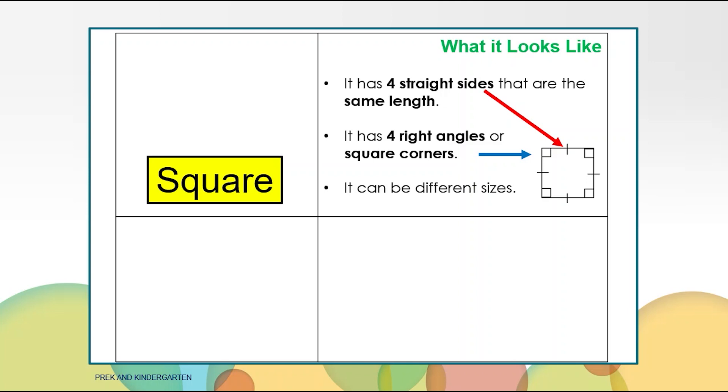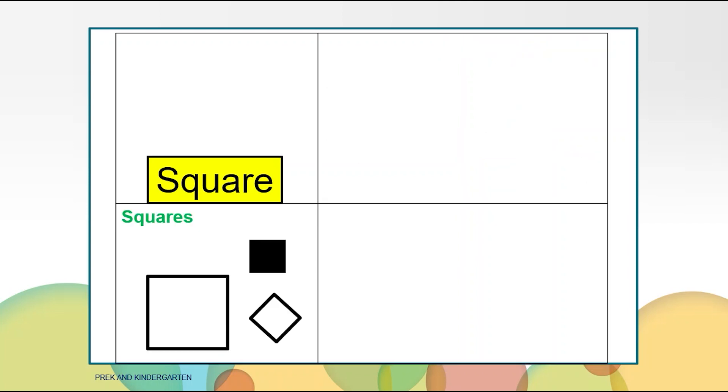Squares can also be any size, small, medium, or large. Here are examples of squares. Some of you may think the last one is a diamond but a diamond is not a geometric shape. It is a square that is just turned.